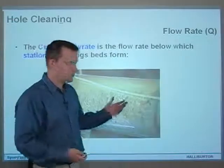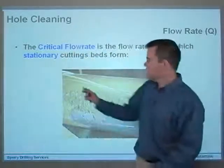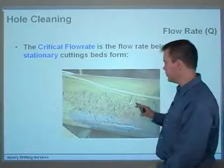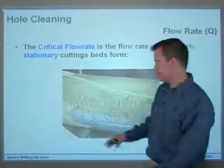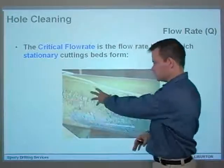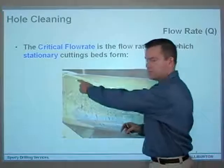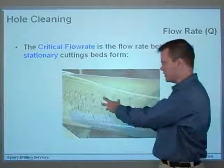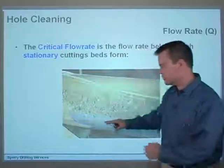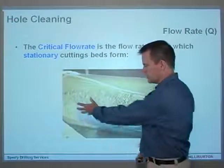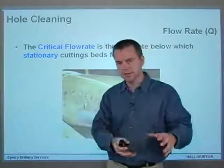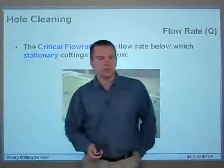Significantly below the critical flow rate, cuttings just fall to the bottom of the hole and start slumping back down the wellbore. You still get a little saltation across the top of the cuttings bed, but it just keeps building up. In a high-angle wellbore, these cuttings will just slide down. If you can imagine the wellbore with its vertical, tangent, and horizontal sections — all the way down the tangent section, if you're below the critical flow rate, you're building up a bed that's just sliding down and collecting at the bottom.